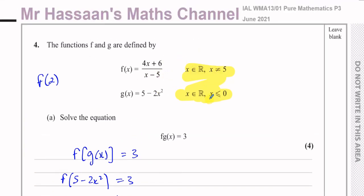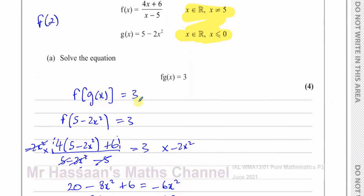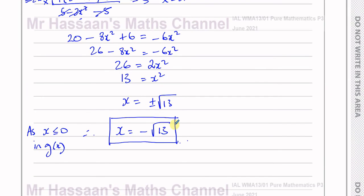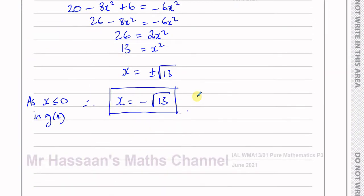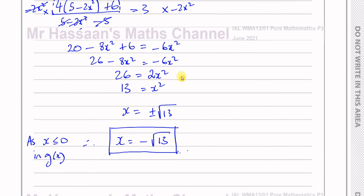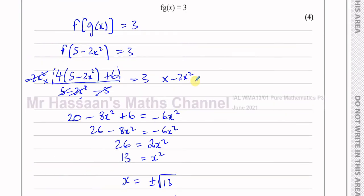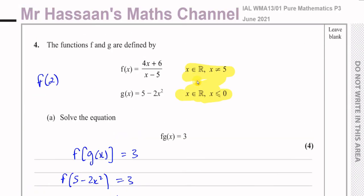In IGCSE maths we normally ignore these kinds of domain restrictions, but in A-level maths they're very important — they affect answers quite drastically. If you wrote x = ±√13, you would lose a mark for sure. That's the answer to part A.